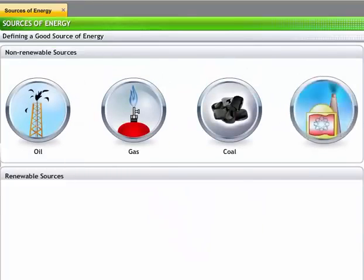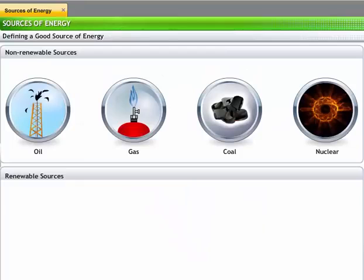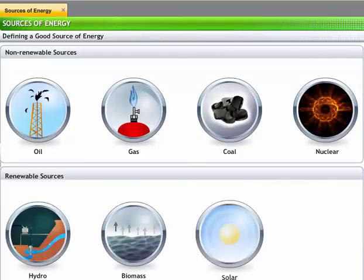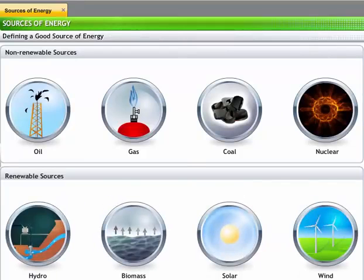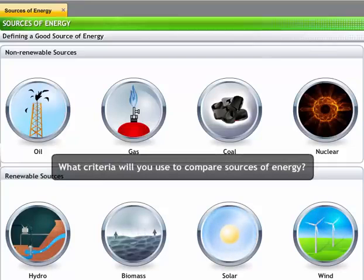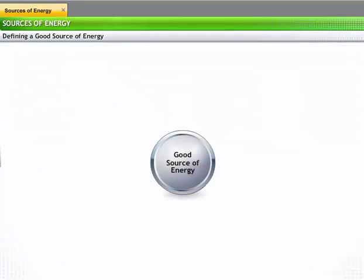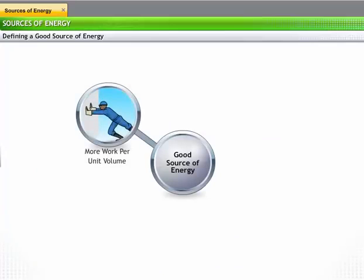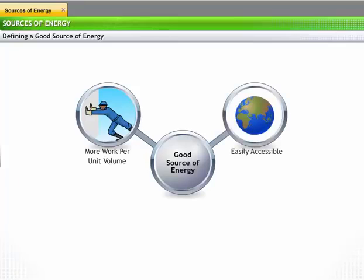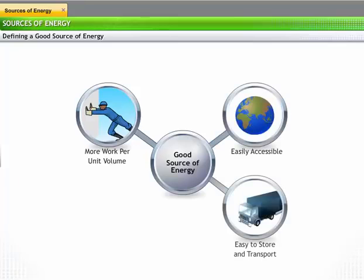We saw that energy can be obtained from a number of sources. However, some sources are better than others. What criteria will you use to compare sources of energy? A good source of energy is one that enables us to do a large amount of work per unit volume or mass, is easily accessible, is easy to store and transport, and is economical.